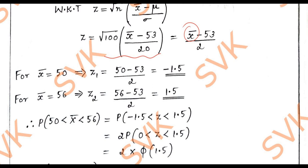When I substitute x̄ = 50, I get z₁ = -1.5. When I substitute x̄ = 56, I get z₂ = 1.5. Therefore, P(50 < x̄ < 56) equals P(-1.5 < z < 1.5).